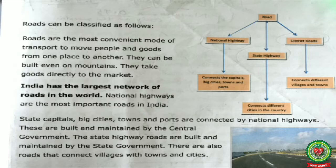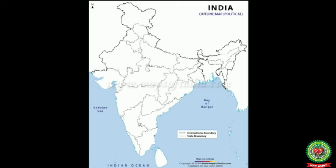We will understand the Golden Quadrilateral and other routes from Amritsar to the major cities through a practical approach — that is, through map work. You should have your India political map, your pencil, your scale, and your sketch colors. Let's start map work now.